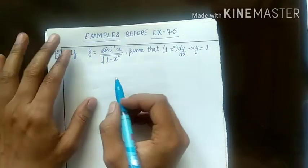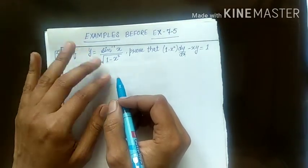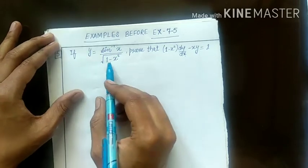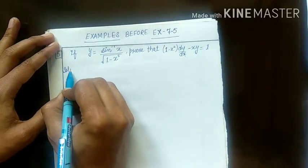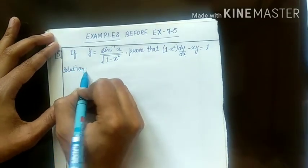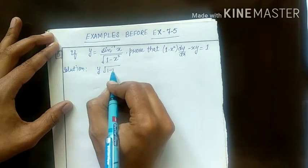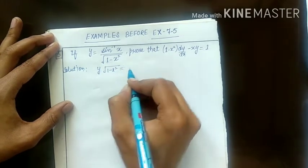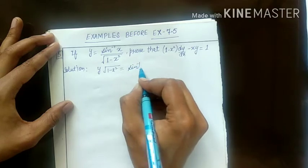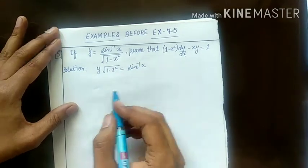You have to do cross multiply here, meaning you have to write the product rule. How to write: y into under root of 1 minus x square is equals to sin inverse x. Product of two functions — apply the product rule here.